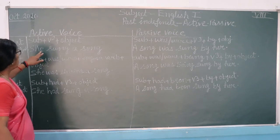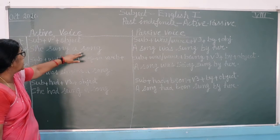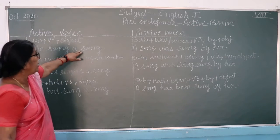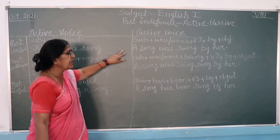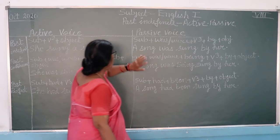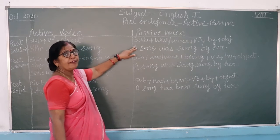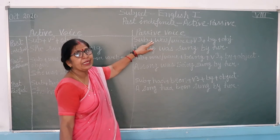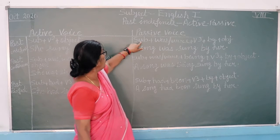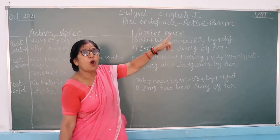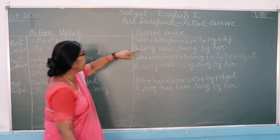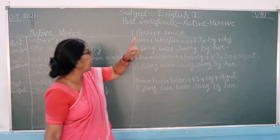So here I start. The active sentence is: she sang a song — past tense. Now let me make the passive voice. The passive voice becomes: the song was sung by her. You can see that in the passive voice, the object becomes the subject.